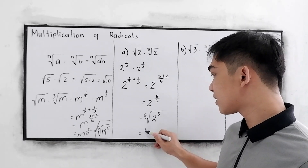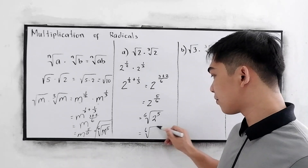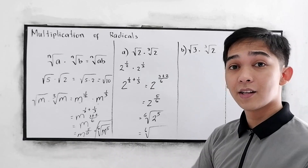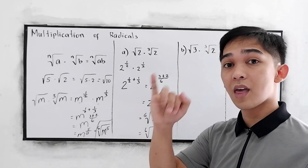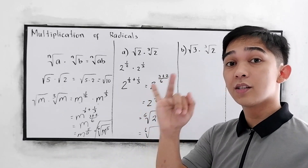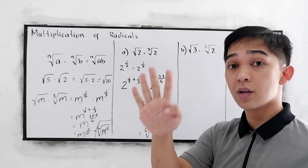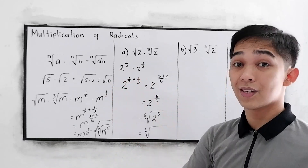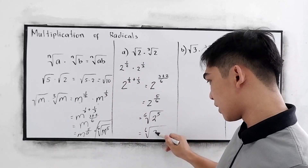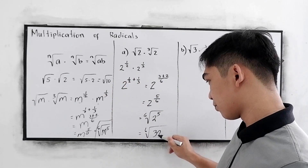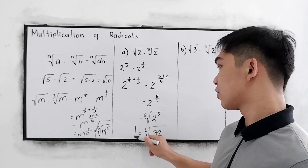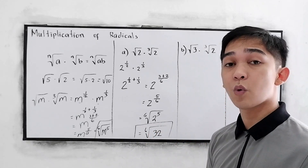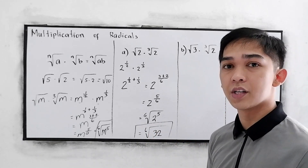So we get 3 plus 2, which is 5 over 6. Write into radical form: we have the 6th root of 2 raised to 5. We can simplify 2 raised to 5, which is 2 times 2 times 2 times 2 times 2, that is 32. So our final answer is the 6th root of 32.